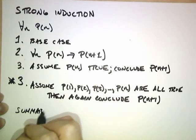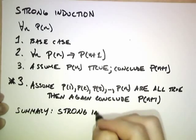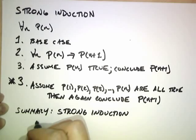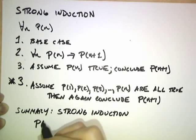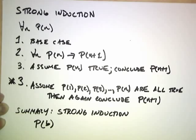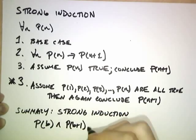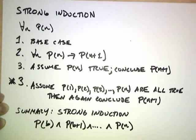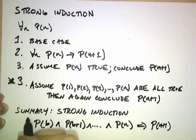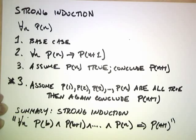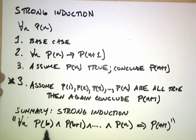The summary is: in strong induction, you can assume that the base case is true — usually it's p of 1, but maybe it's p of b, wherever you're going to start — and p of b plus 1, and so forth, all the way up to p of n, and then you want to show that this implies p of n plus 1. So I'm giving you more power: you get to assume not only that p of n is true, but also all of these other predicates down to your base case.